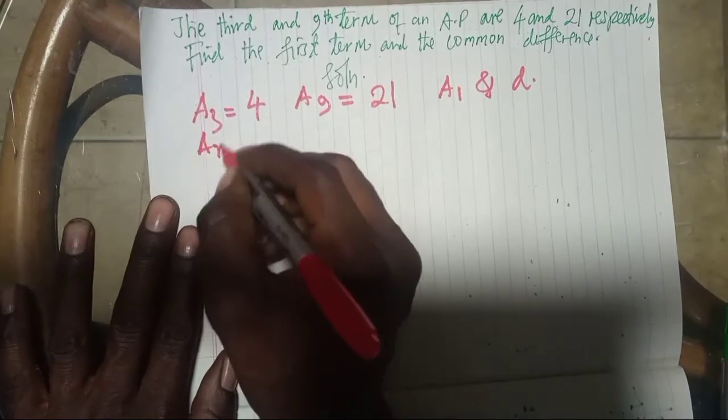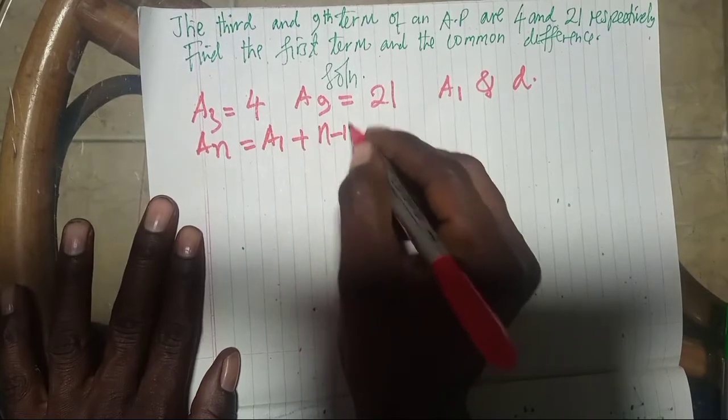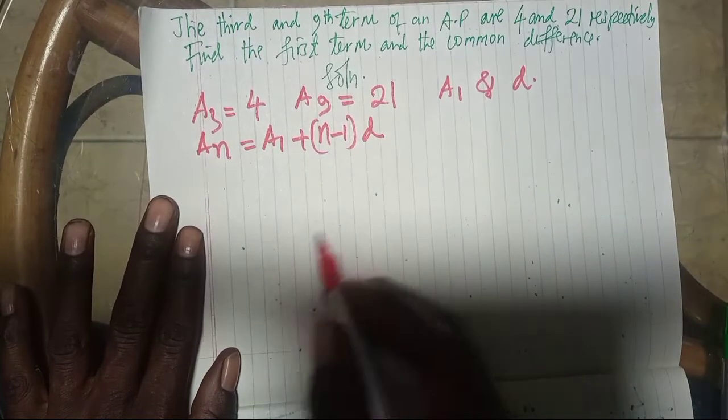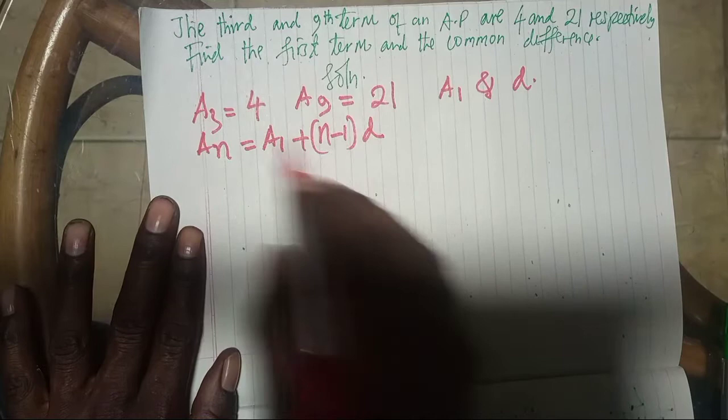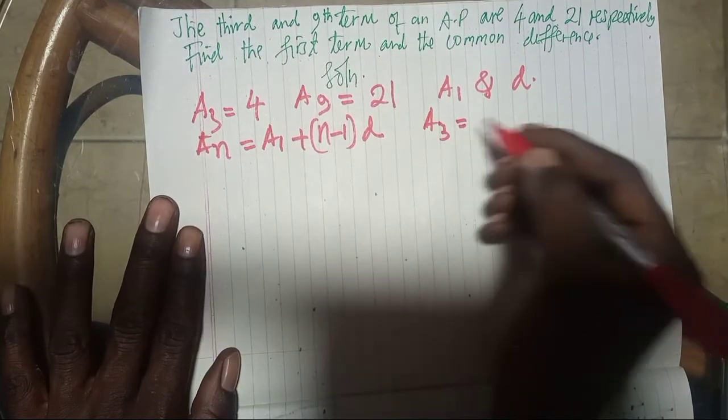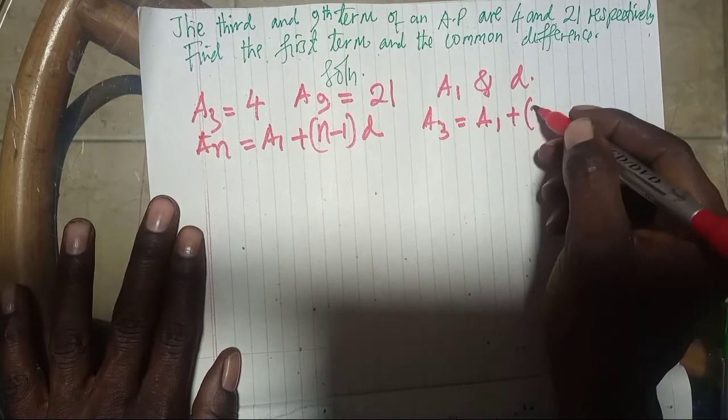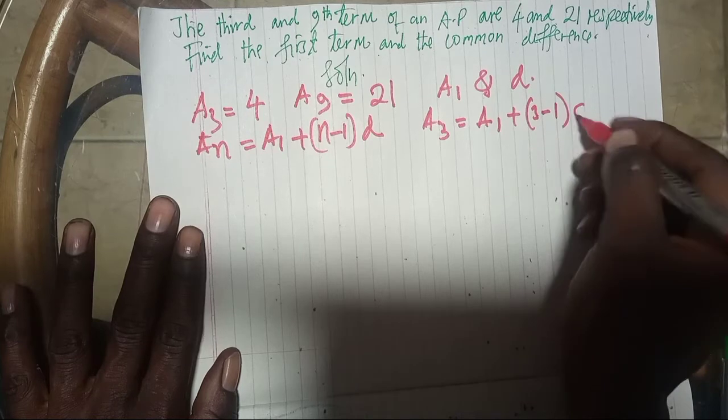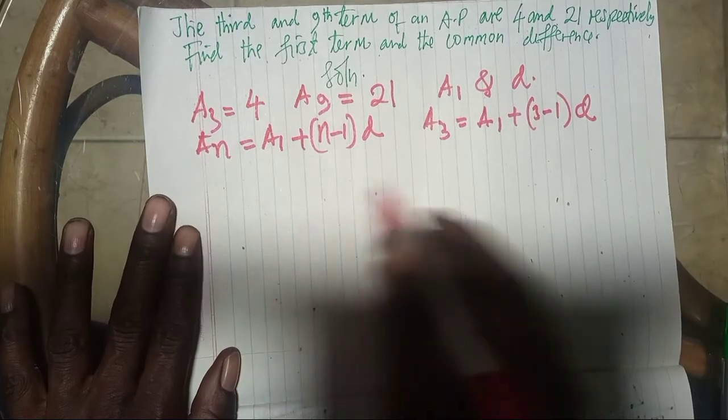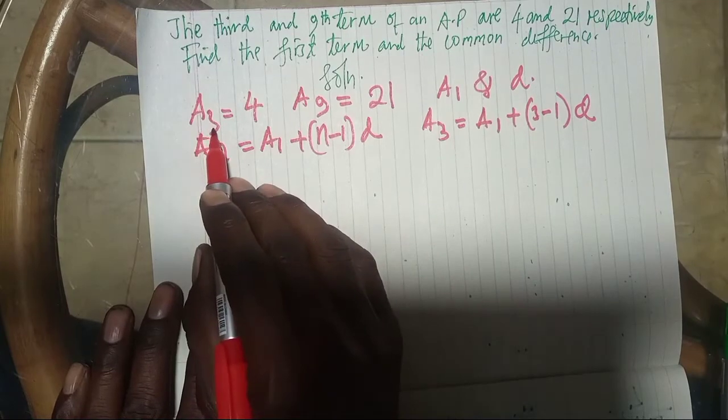Remember the general term is AN equals A1 plus N minus 1 times D. Therefore, from this concept, A3 is equal to A1 plus 3 minus 1 times D.